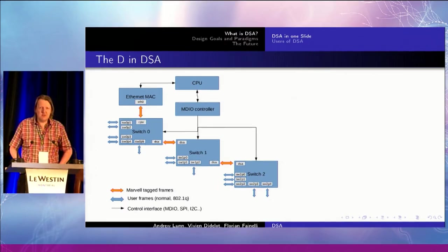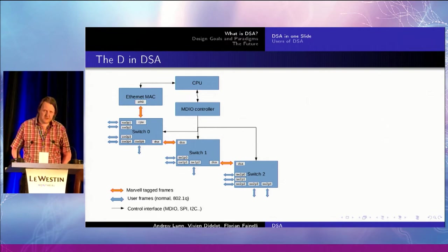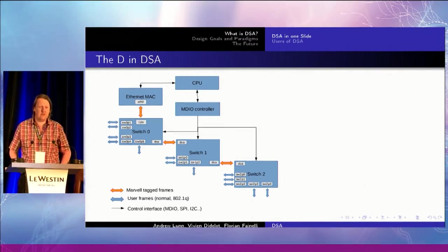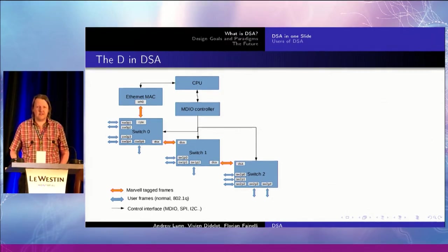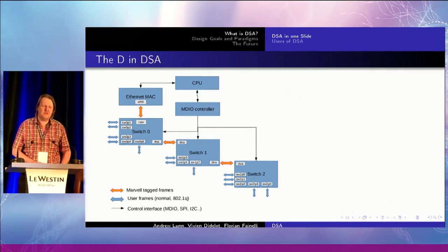But then there's the D bit in DSA — distributed — which means we can have lots of switches, and it gets really confusing. In this case, again: CPU, Ethernet controller, MDIO, a switch which is connected to another switch, which could be connected to another switch. We've got to forward the packets around, and hopefully they come out at some point. We've got these DSA ports which we connect switches together with. Most of this is Marvell terminology, but in effect it's generic — it should work with any chipset that supports this sort of concept.